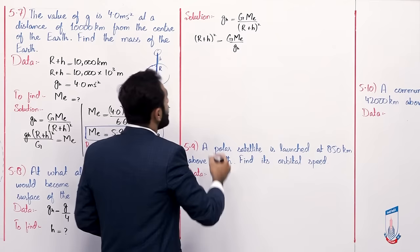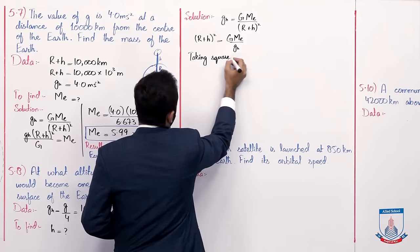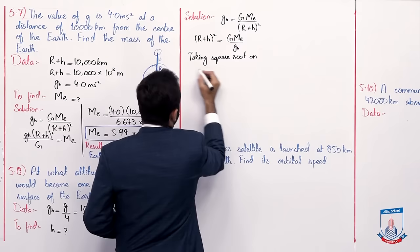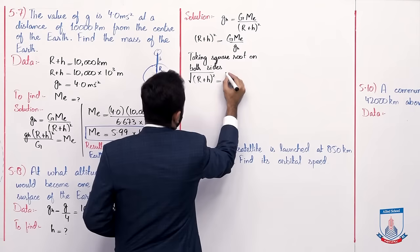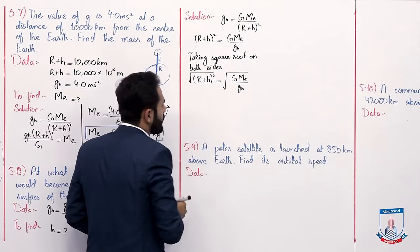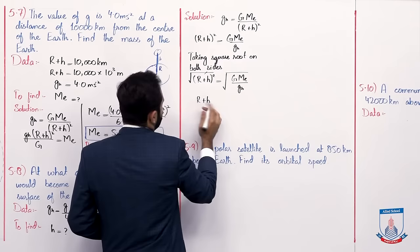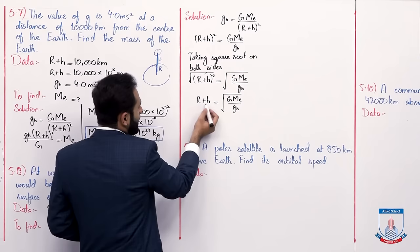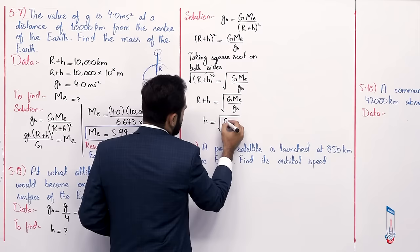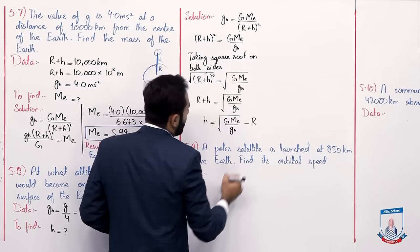Since there is a square, to remove it we take the square root of both sides. Taking square root on both sides: r plus h equals square root of (G times mass of Earth over g_h). Since height is what we want, r goes to the other side by subtraction. So height h equals square root of (G mass of Earth over g_h) minus r. This is our derived formula for height.